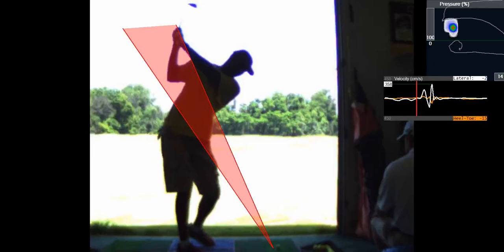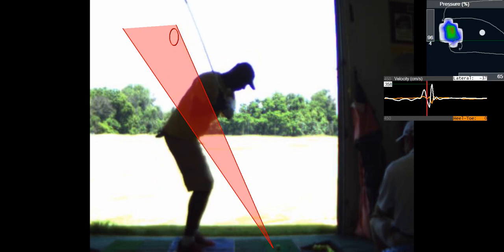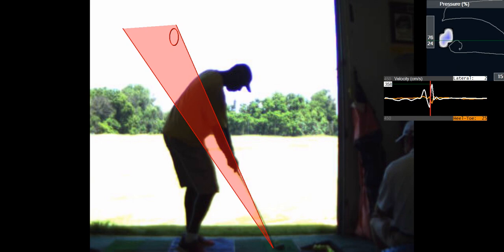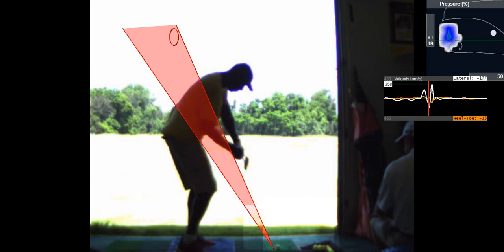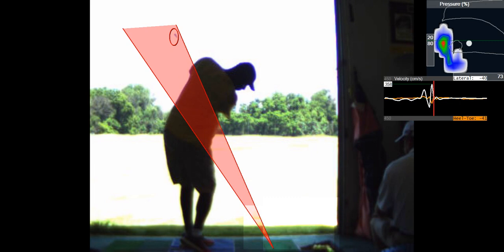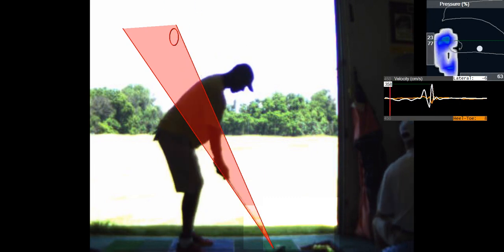So your goal is to get your hands in that red shaded area at the top of your swing every time and then keep them in there. Your tendency is to get a little steep coming down right there. But it's not far off.